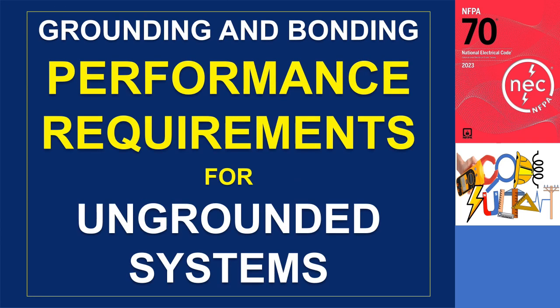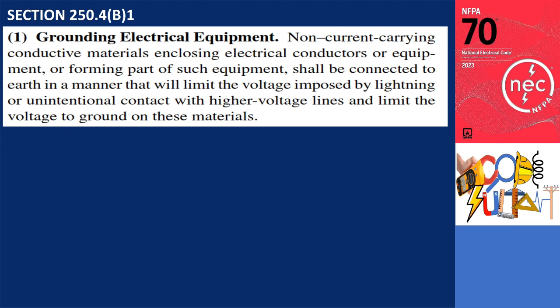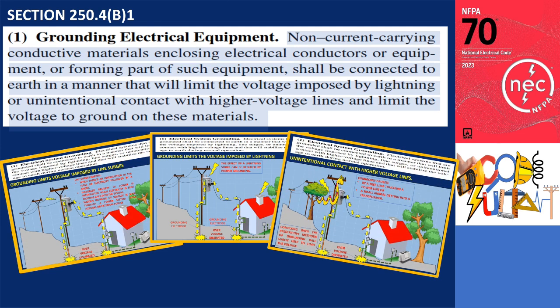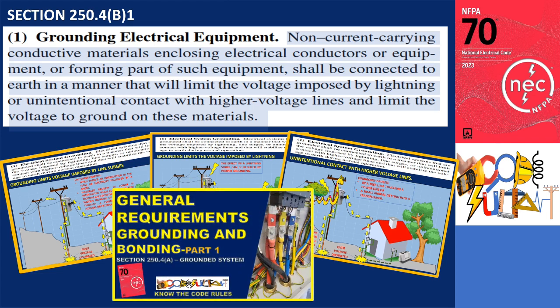What are the performance requirements for grounding and bonding for ungrounded systems? Section 250.4(B)(1), Grounding Electrical Equipment, states: Non-current-carrying conductive materials enclosing electrical conductors or equipment, or forming part of such equipment, shall be connected to earth in a manner that will limit the voltage imposed by lightning or unintentional contact with higher voltage lines, and limit the voltage to ground on these materials. This requirement is identical in scope to that for grounded systems in 250.4(A)(1).